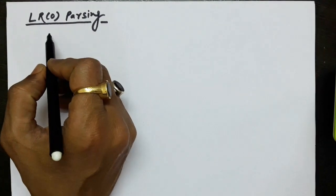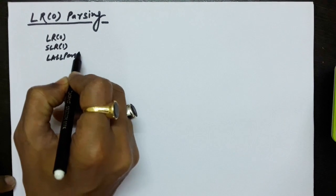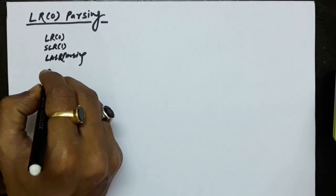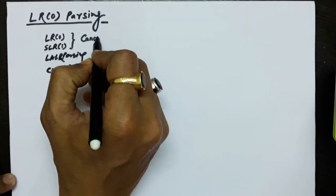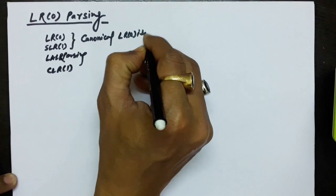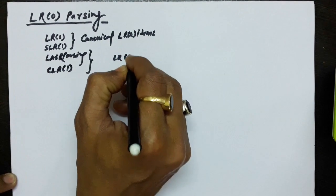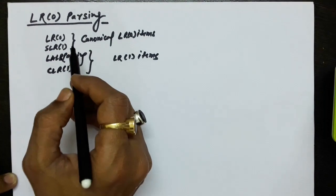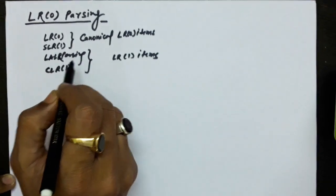LR parsers are there to help us, and they help us do bottom-up parsing. There are four types of LR parsers: LR0 parsing, SLR1 parsing, LALR parsing, and CLR1 parsing. For LR0 and SLR1, we compute the canonical collection of LR0 items, and for LALR1 and CLR1 parsers, we compute the canonical collection of LR1 items.